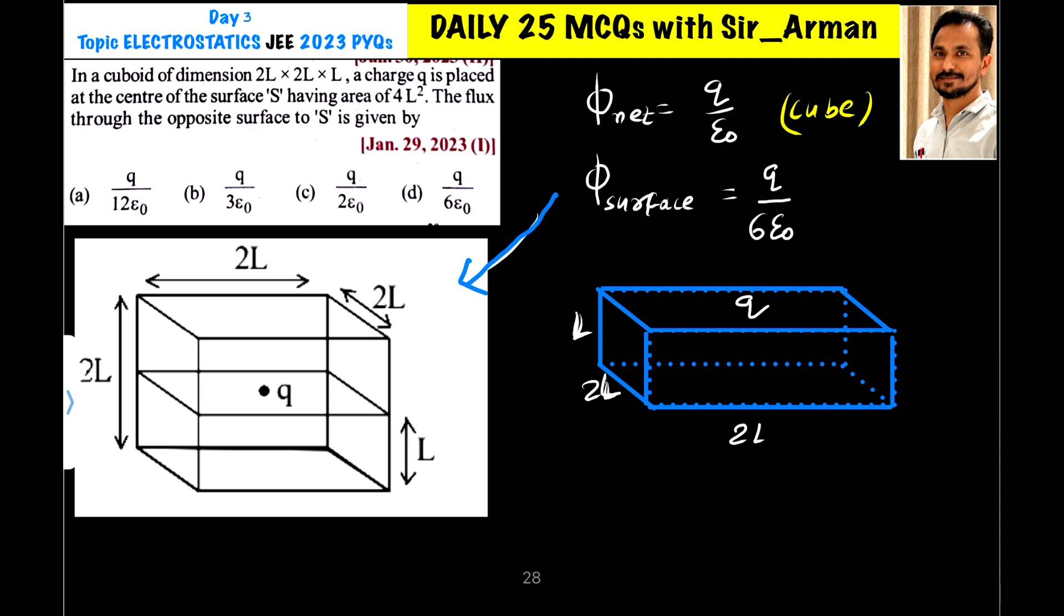Let us assume I am converting this cuboid into a cube of side 2L. This is what I have shown here. Here we have a cube whose sides are 2L. When I convert this cuboid into a cube, the charge is now at the center of the cube. This charge Q is at the center of the cube having side 2L.